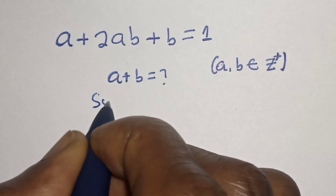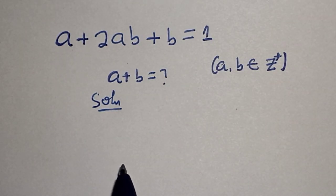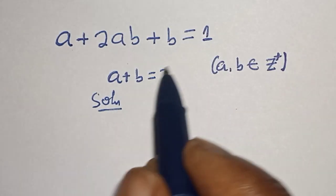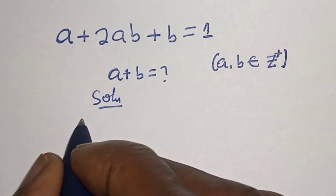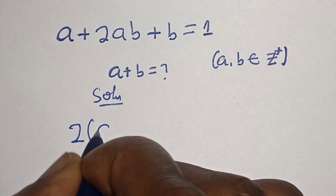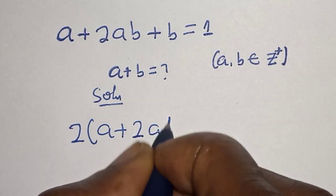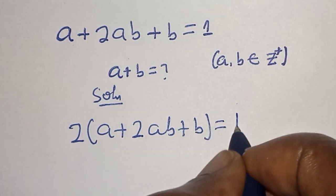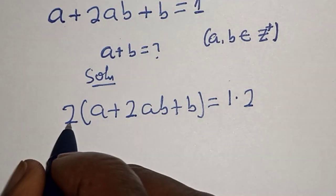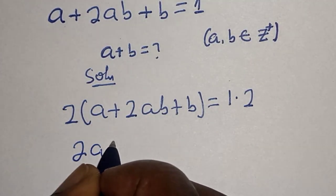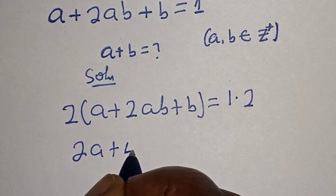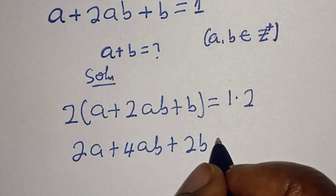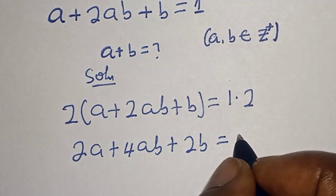Solution. We have the given equation: a plus 2ab plus b is equal to 1. Let's multiply both sides by 2. That is 2 multiplied by (a plus 2ab plus b) is equal to 1 multiplied by 2. Then 2a plus 4ab plus 2b is equal to 2.